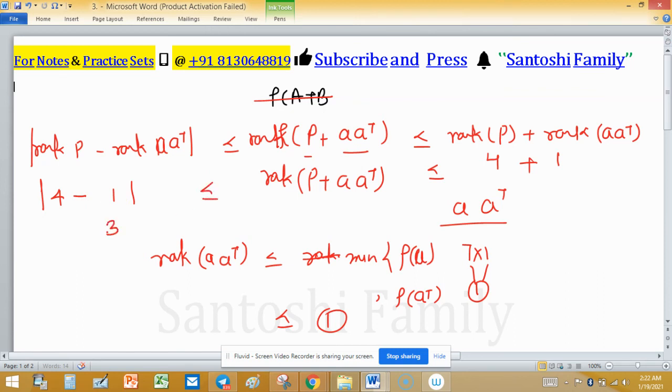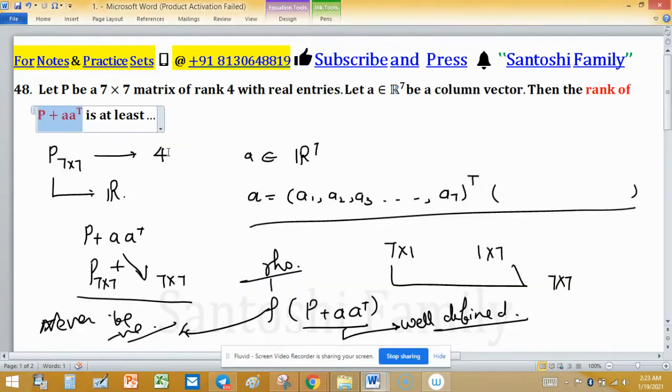So least value is, or least possible value is 3. So answer of this problem is 3 here.